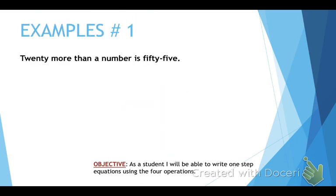Example number one. So how are we going to do this? Well, I like to do this in a very specific way. We're going to read it first. 20 more than a number is 55. Now, any time you see the word is, that actually gives you an equal sign. So that's going to be 55. If you see the word is, 20 more than a number is 55, that's your equal sign. And we have 55.